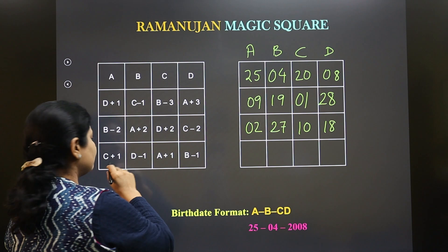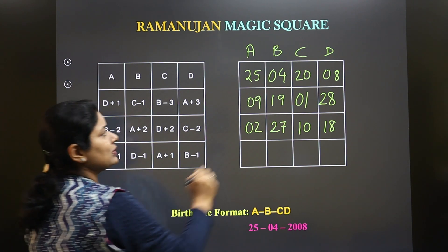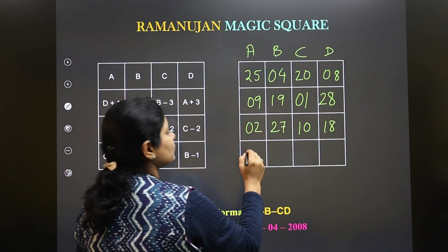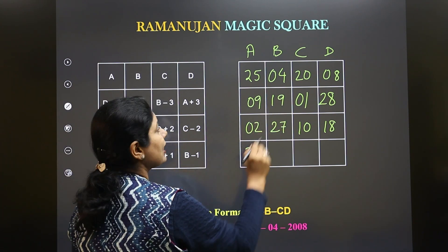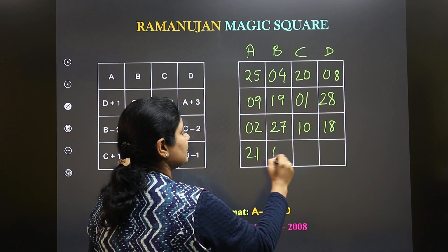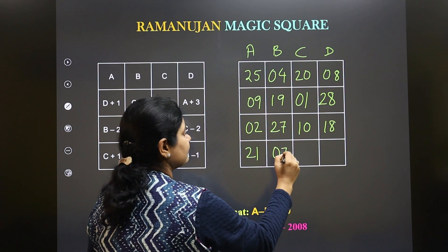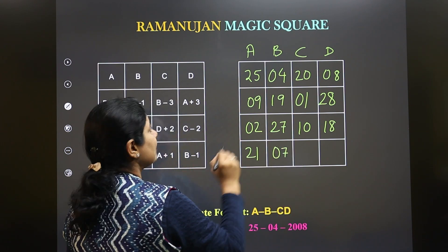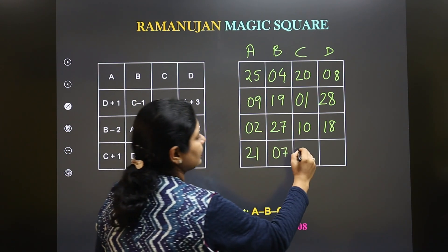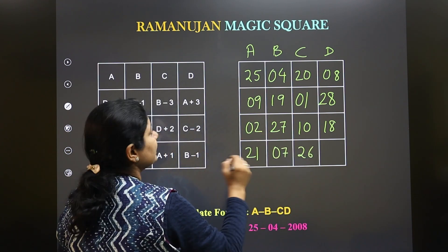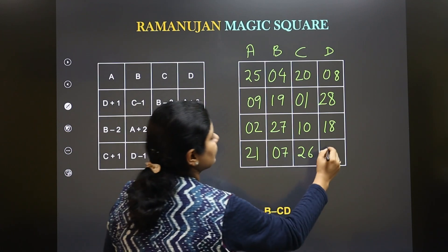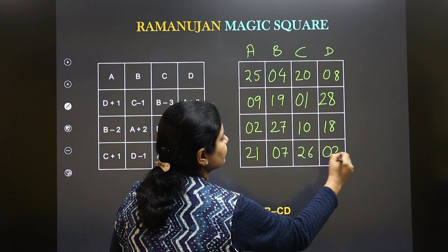For the fourth row, the formula gives: C plus 1 is 21, D minus 1 is 07, A plus 1 is 26, and B minus 1 will give you 03.